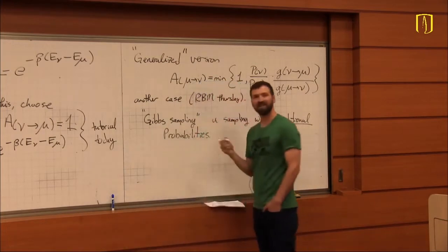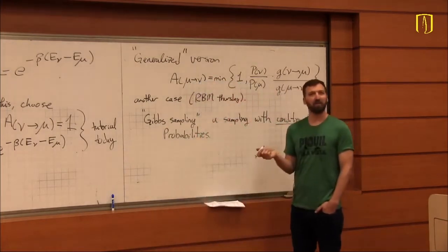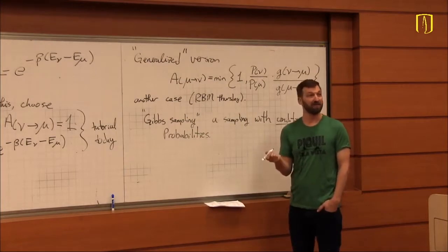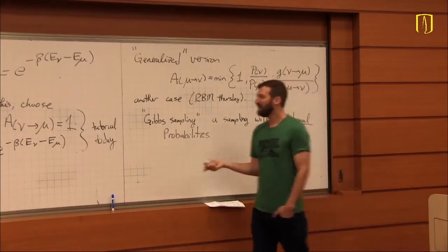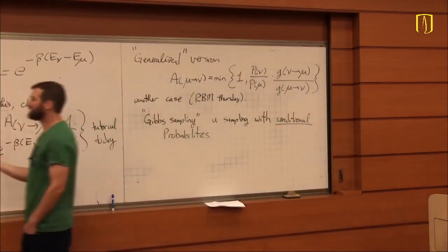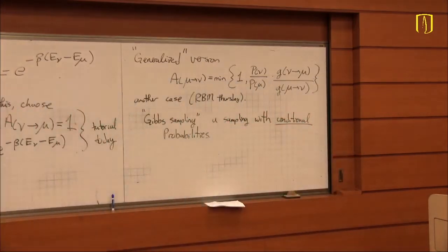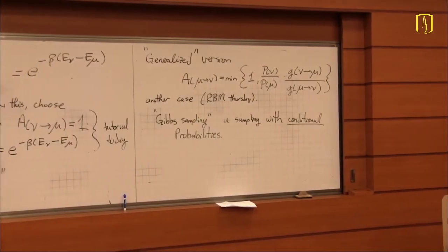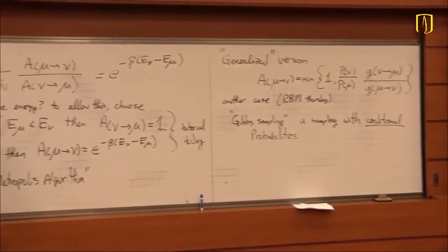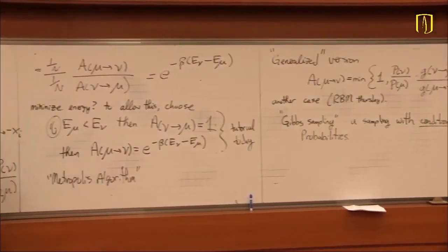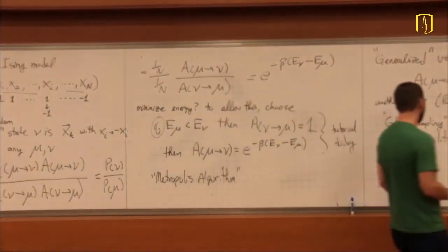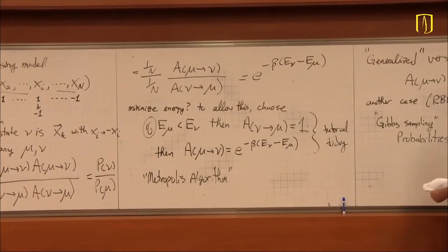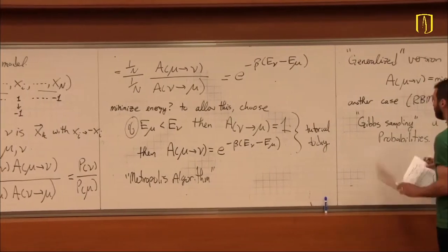The idea is you can propose an update on some subset of spins conditioned on the state of the others. In some sense, you're already doing that in the single spin flip: you're proposing an update of one spin conditioned on everything else. That's the important word — conditioned. Conditional probabilities can be formalized.